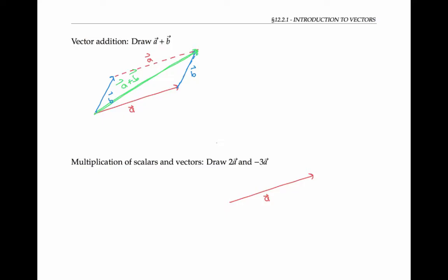It's also possible to multiply scalars and vectors. If we start with the vector a, then the vector 2a goes in the same direction but is twice as long. The vector negative 3a goes in the opposite direction because of the negative, and is three times as long. The vectors drawn are only rough approximations. To get a more accurate drawing, I need to use a ruler or place my vectors on coordinate grids.